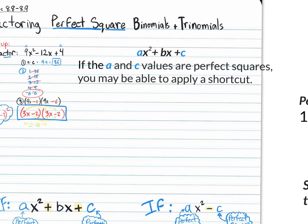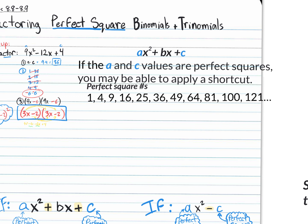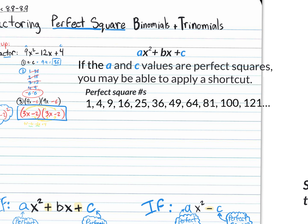If your first term is a perfect square term and your last term is a perfect square term, you can square root each of them and plug them into your answer format. Perfect square numbers are 1, 4, 9, 16, 25, 36, 49, 64, and they continue forever. They come from squaring whole numbers: 1 squared is 1, 2 squared is 4, and so on. Taking the square root of any perfect square gives a nice, clean answer.